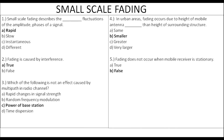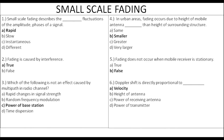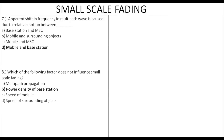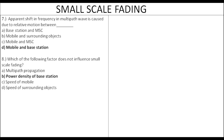Doppler shift is directly proportional to velocity and the direction of motion with respect to the direction of arrival. This is an apparent shift in frequency in a multipath channel. Small scale fading influences transmission characteristics, speed of surrounding objects, speed of mobile, and multipath propagation, but does not influence the power density of the base station.